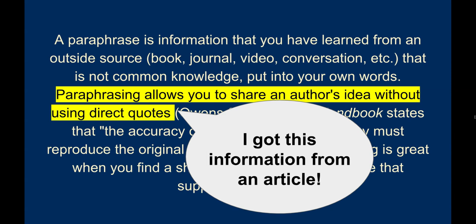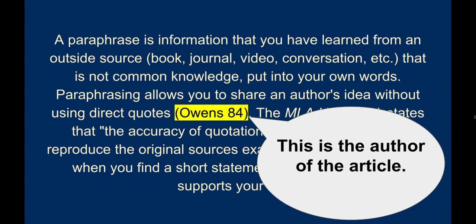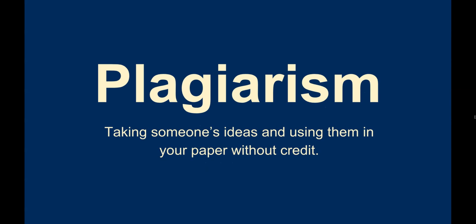Citation is the practice of identifying the sources you have used in your writing. Citations are an important part of any college writing project because they allow your reader to follow the trail of your research and to verify the claims that you make in your writing. They also give credit to the sources that you use to advance your argument. Giving proper acknowledgement also ensures that you do not plagiarize, which is a very serious academic offense.